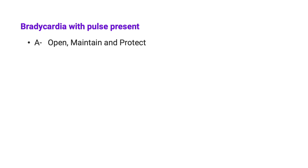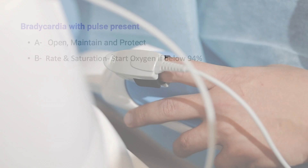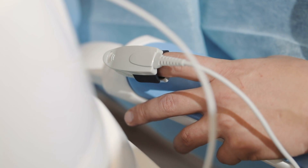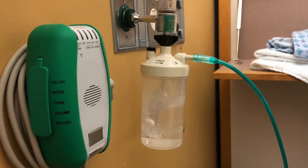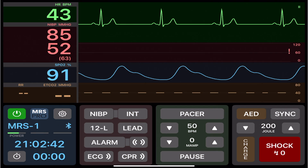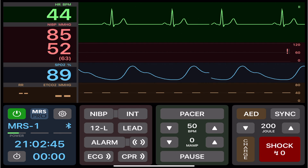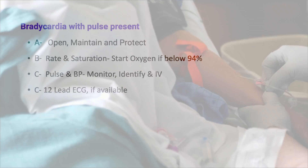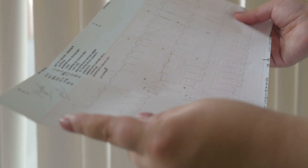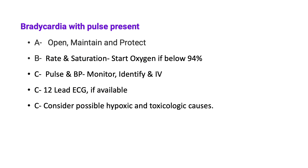Once Bradycardia has been identified, ensure that the patient's airway is opened, maintained and protected. Check the breathing rate and saturation and if the patient is hypoxemic, provide oxygen or assist breathing as necessary. Check the patient's pulse and blood pressure, get the monitor on, identify the rhythm and get IV access. Also don't forget about a 12-lead ECG if available. Consideration should also be given to possible hypoxic and toxicologic causes.